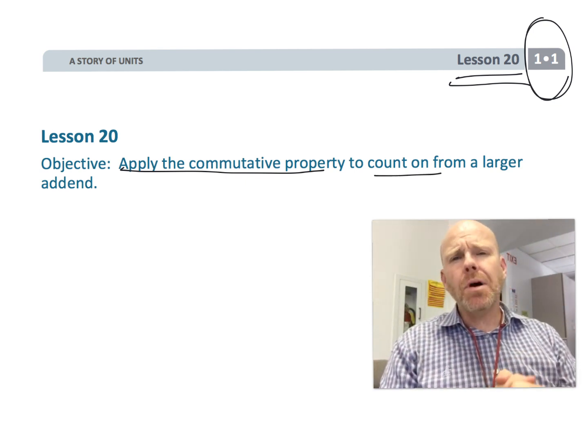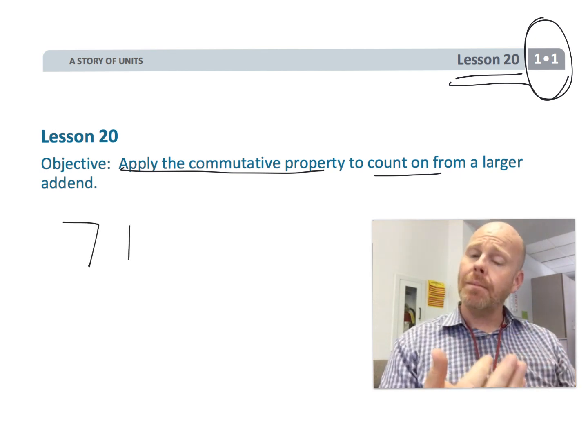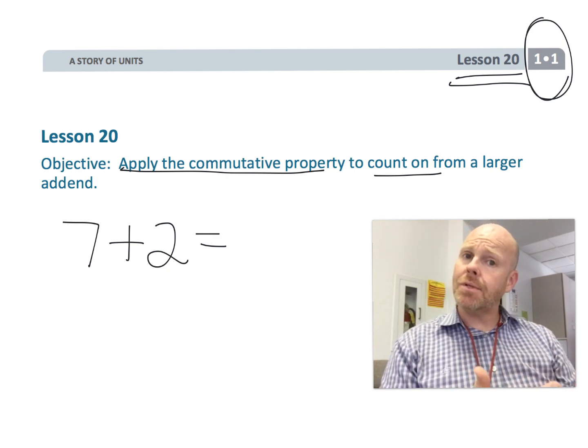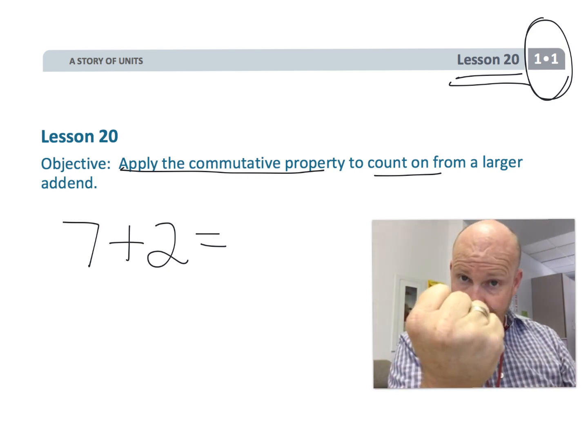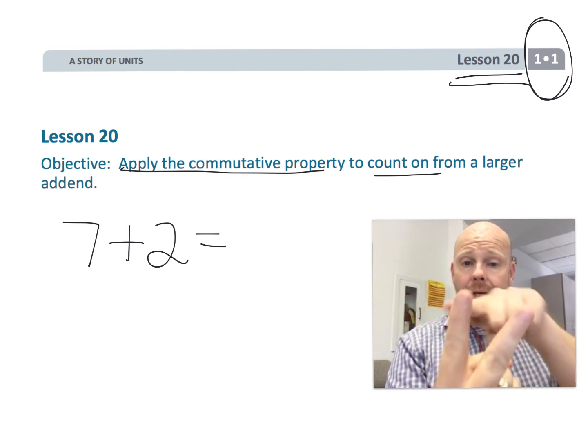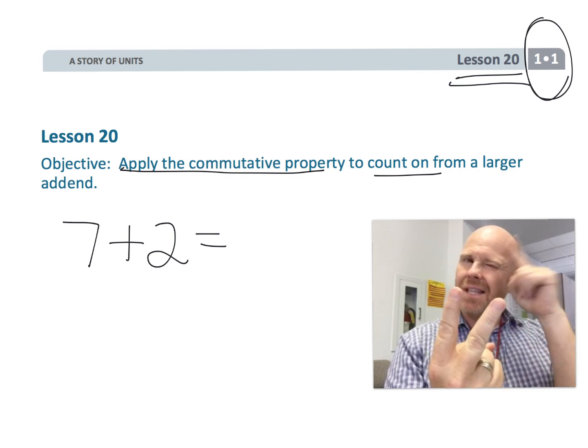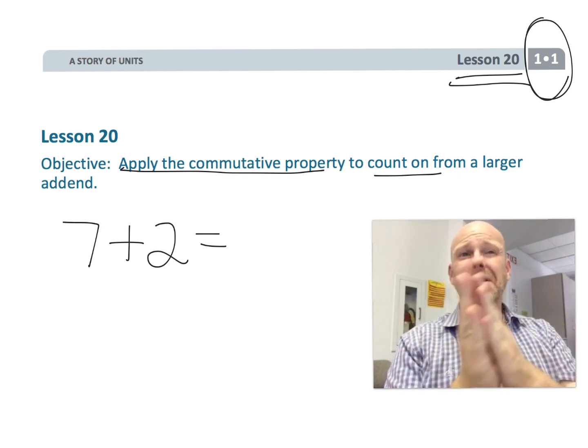For example, suppose we had seven plus two. What we've been teaching our students is to do the count on method. Start with that seven and count with a fist: seven, and we say eight, nine. Because we've counted up to our two and the last number I said is nine, that says that seven plus two is nine.